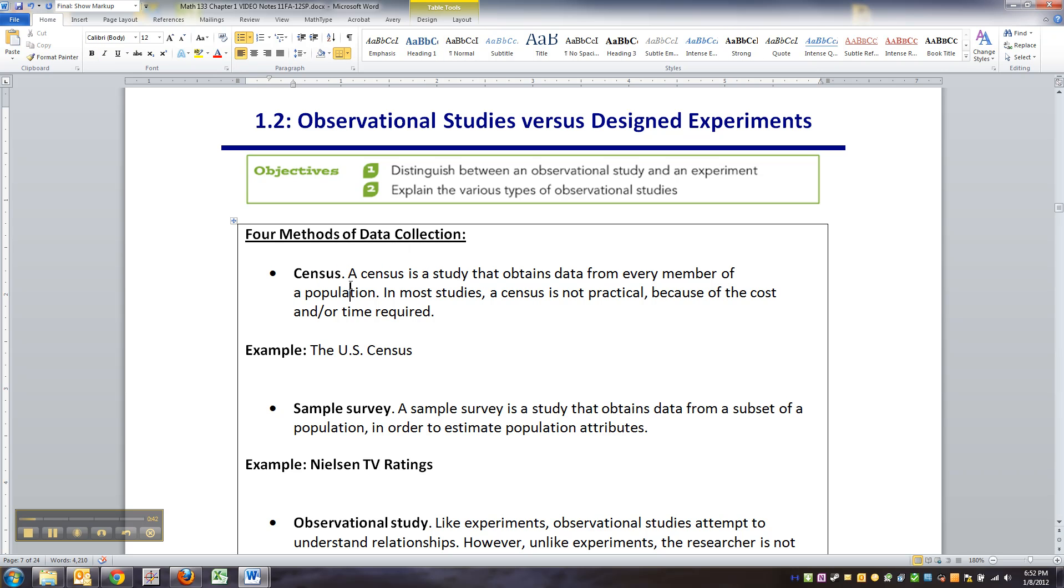A census. A census is a study that obtains data from every member of the population, every single person, every single entity, every single everything. Now, you can imagine that in real life, a census is not very practical. Cost, time, you basically just can't get everybody, even when you try. And that's the problem with the U.S. census.